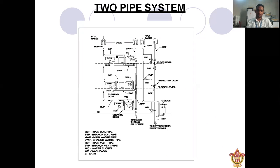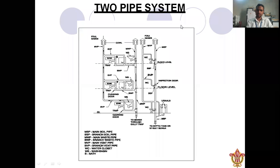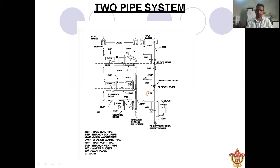This is a two pipe system — you can understand it with the drawing. In the two pipe system, the soil pipe and waste pipe are connected differently. MSP stands for Main Soil Pipe, and BSP stands for Branch Soil Pipe. You can see the branch soil pipe and main soil pipe labeled on the diagram.